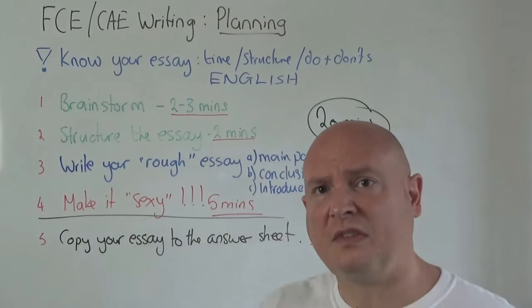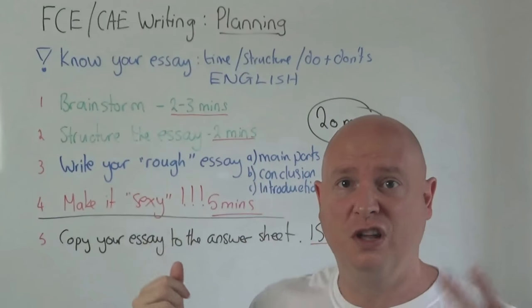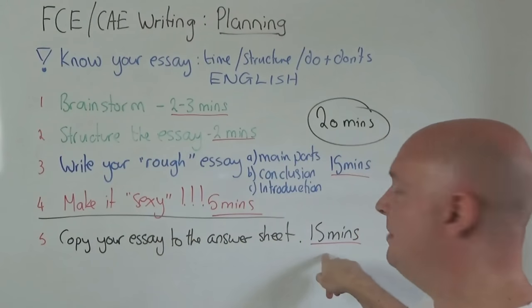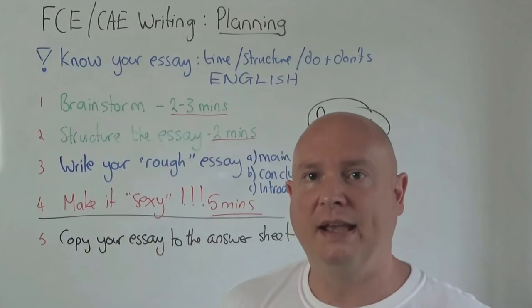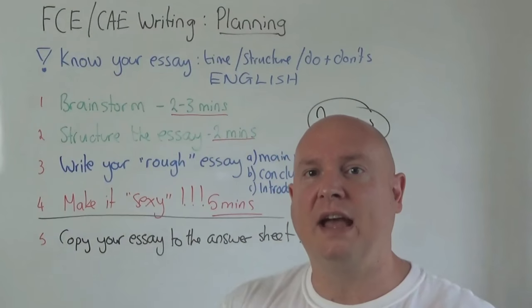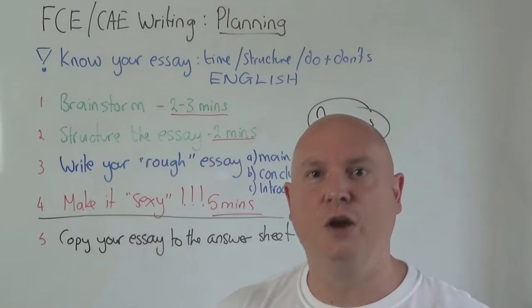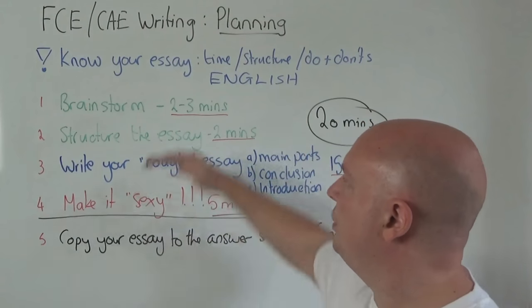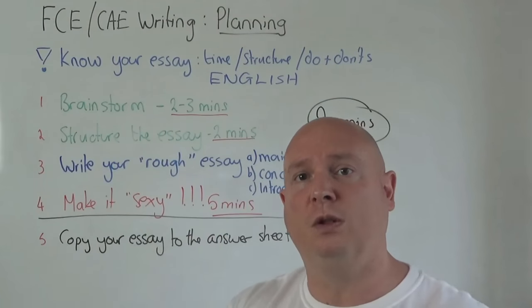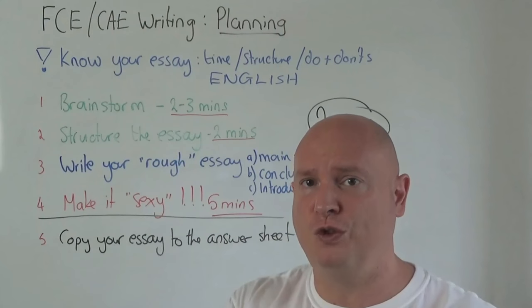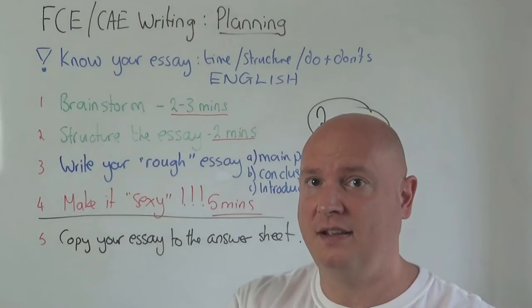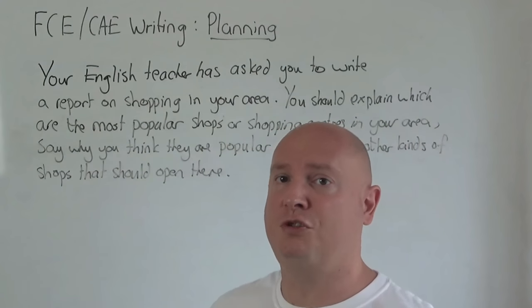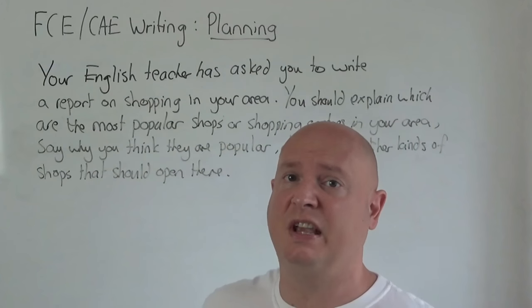Now you've done that — your hand's almost broken — and this is just essay number one because you've got two to do. Then you've got 15 minutes left to copy your essay to the exam paper. Once you've done that, you can breathe a sigh of relief and go to essay number two. Good luck. Now what I'm going to do is show you how to do these individual steps. This video will be a long one, but it's going to make a difference to your result if you follow it. Let's do it. I have taken an essay question from an FCE trainer. It doesn't matter if it's FCE or CAE — the principle is the same.